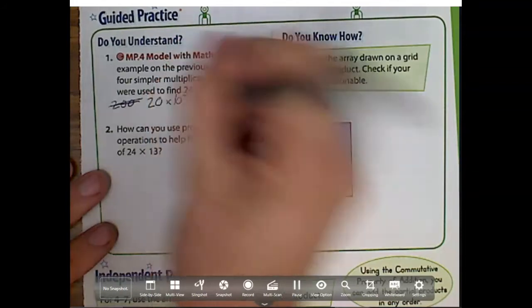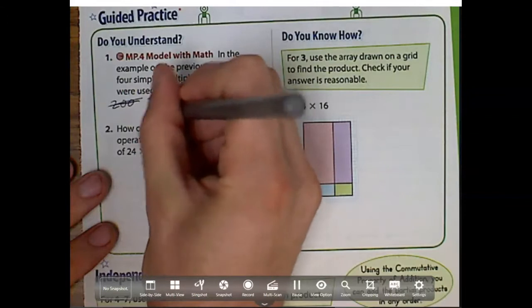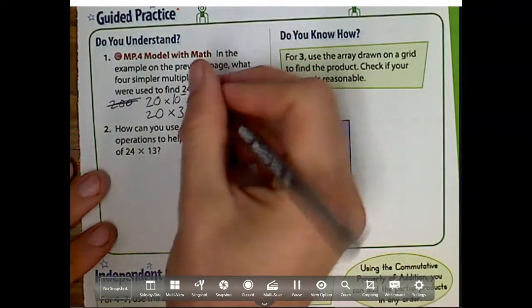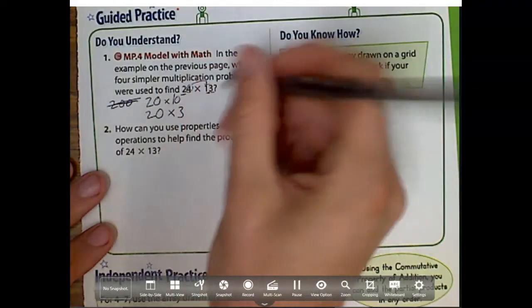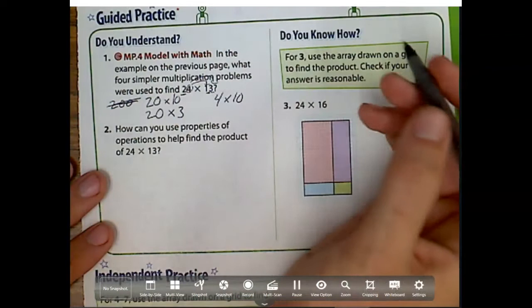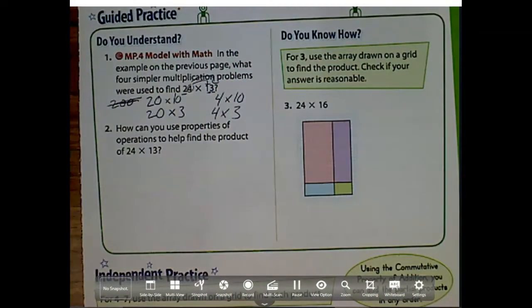20 times 10. We had done 20 times the one place value, which is 20 times 3. We had also done 4 times 10 and we had done 4 times 3. Now it doesn't tell us to solve them, so we're going to leave it just like that. But if we solve them and add all those partial products together, we would see that we would get the same answer that we did on the previous page.